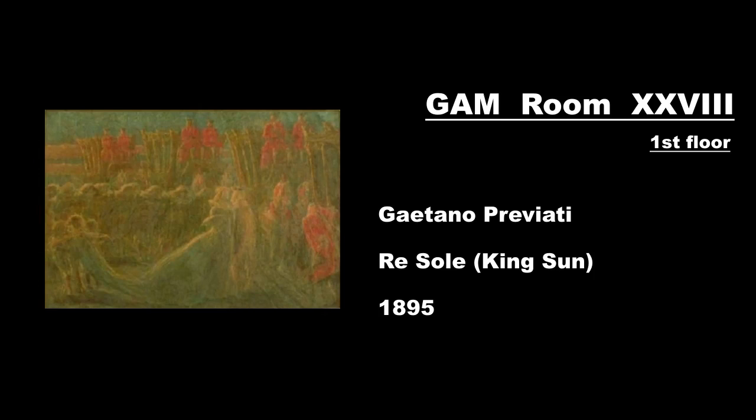Gaetano Previati, Re Sole — King Sun — 1895. This work is by Gaetano Previati from Ferrara, symbolist in subject and pointillist in technique, providing pure color filaments drawn near with very long strokes, almost iridescent. In this scene Previati shows a historical subject: an episode of the life of King Sun, Louis XIV of France.